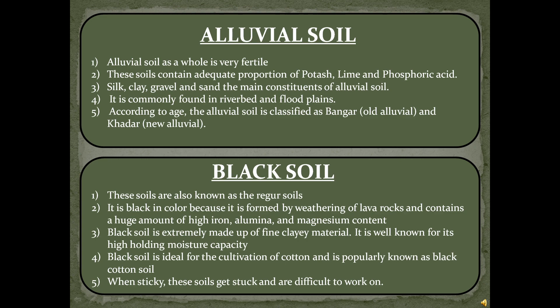Black soil is also known as Regur soil. It is black in color because it is formed by weathering of lava rocks and contains a high amount of iron, alumina, and magnesium. Black soil is extremely fine clay material and is well known for its high moisture-holding capacity. It is ideal for the cultivation of cotton and is popularly known as black cotton soil. When sticky, these soils get stuck and are difficult to work on.